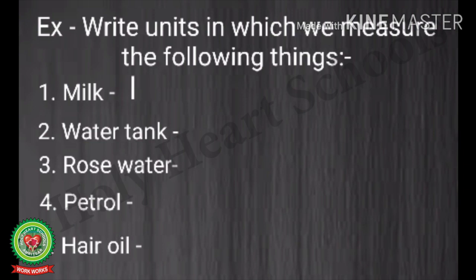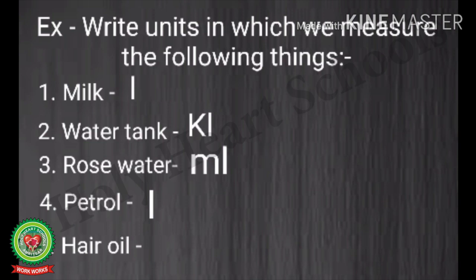Number two is water tank, and the water in the tank is in kilolitres, so in front of water tank we will write KL. Number three is rose water, and we buy rose water in millilitres, so we will write ML. Number four is petrol, and we buy petrol in litres, so in front of petrol we will write L. Number five is hair oil, and we buy hair oil in millilitres, so we will write ML.